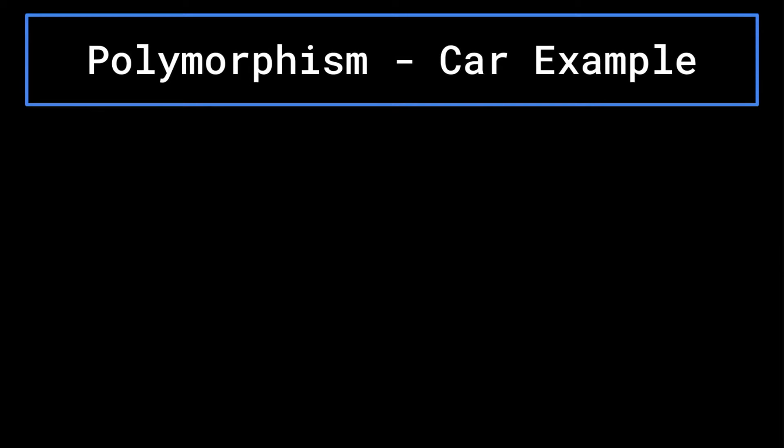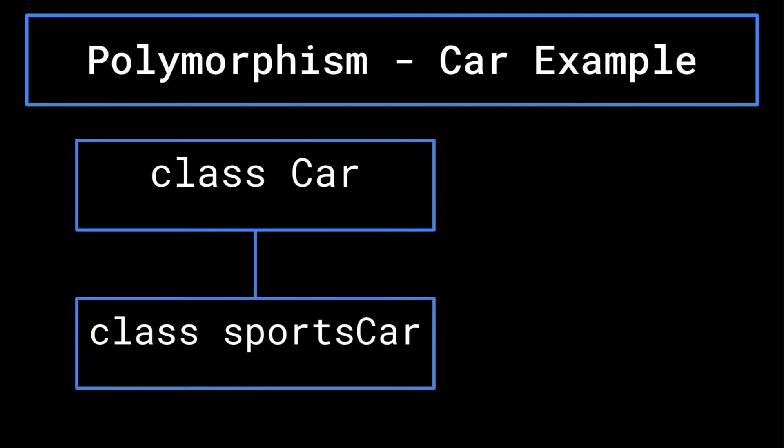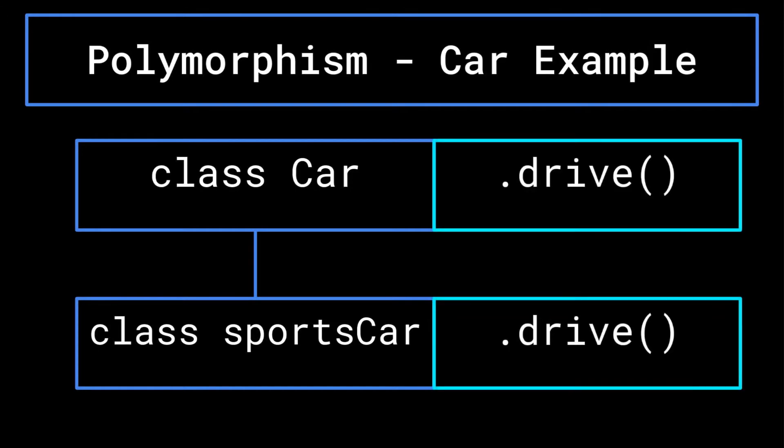Let's say you are writing a program to represent many different types of cars in a class hierarchy. At the top of the hierarchy, you may have the generic car class. You then may create a sports car class as a subclass of the car class. You then may create a dot drive method in both of the classes.